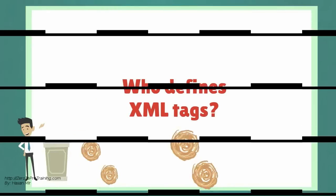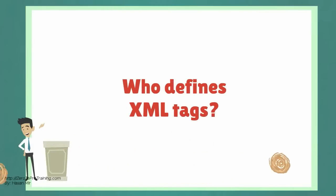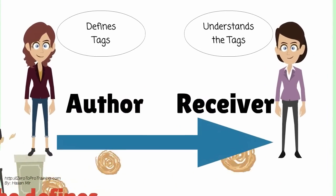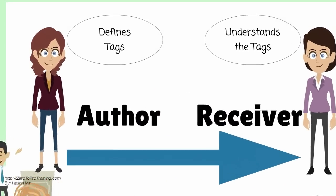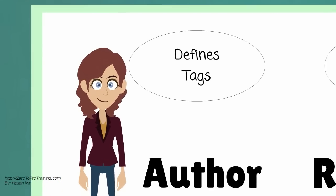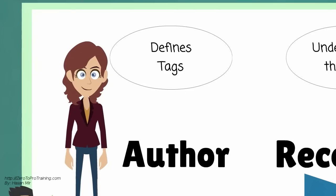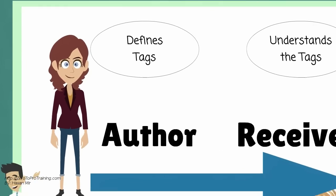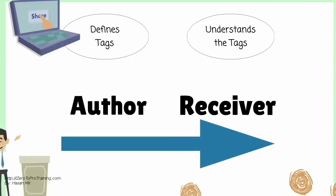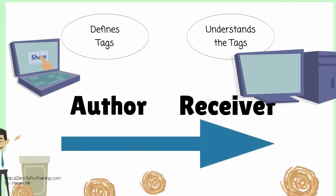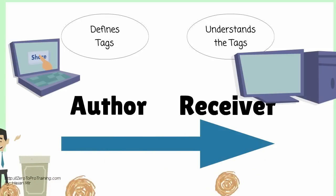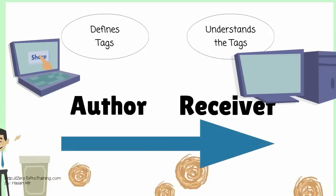Who defines XML tags? The tags in XML documents are not predefined in any standards. The author of the document could define the tags. The meaning of the tags must be understood by the receiver of the document in order to successfully process it. The author and the receiver could be humans or software applications — these days, most data is exchanged between two software applications in XML format.